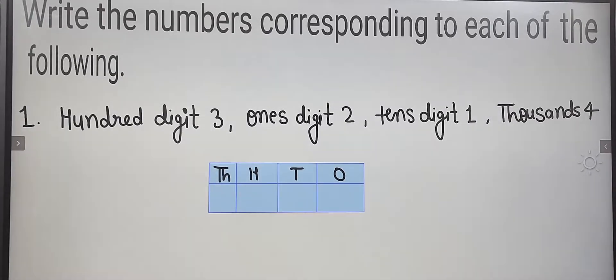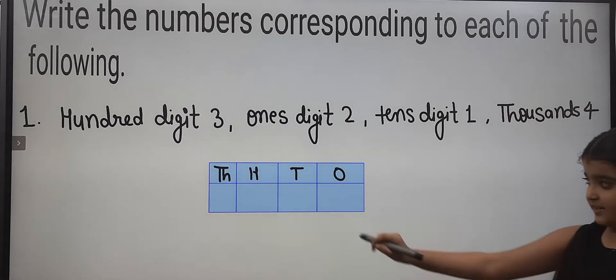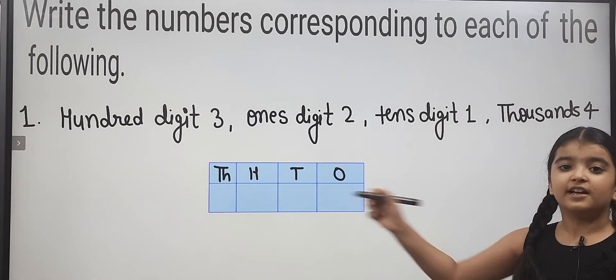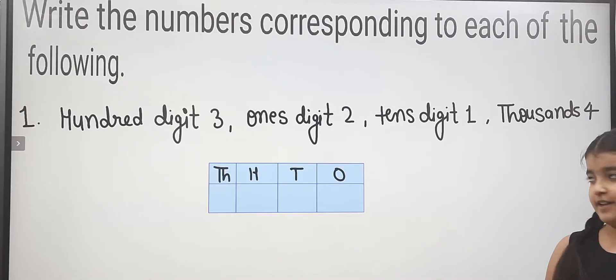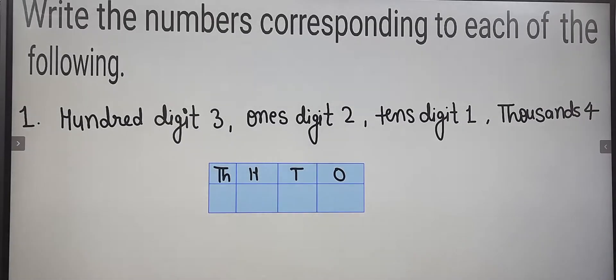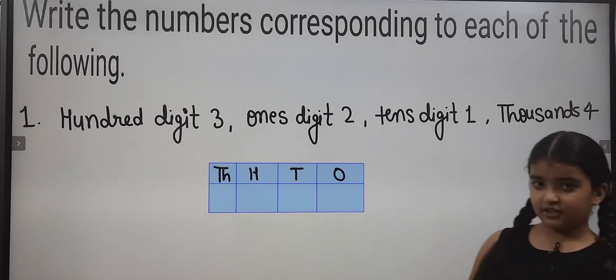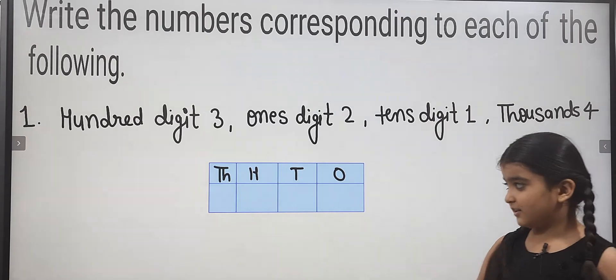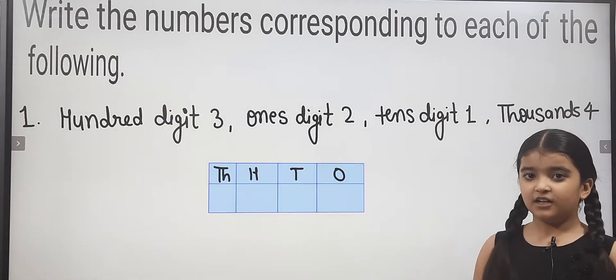Tens digit is 1 — that is the place called Tens where it comes. Thousands digit is 4, so 4 will be coming. Next we will create a number.